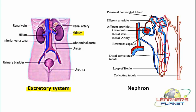Both kidneys receive blood from the major artery known as the renal artery. These renal arteries transport blood from the body into the kidneys, where renal arterioles and capillaries are formed. The blood is then filtered, and during this filtration process, the toxins, waste material, and extra ions present are all filtered out.